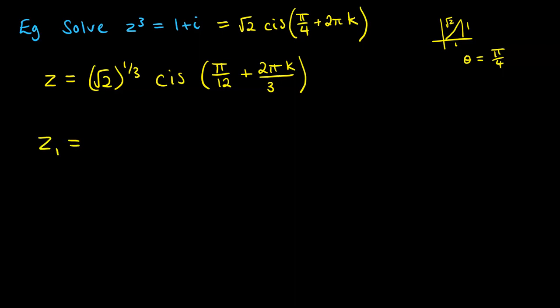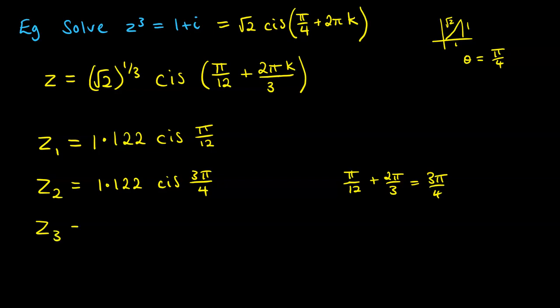So z1, the first solution, will be √2 to the power of 1/3, which is 1.122, cis of π/12. Our counter for k is 0 on our first solution. We don't add any rotations there. And then our second one will have the same modulus, but this time the argument will be π/12 + 2π/3, which is equal to 3π/4.